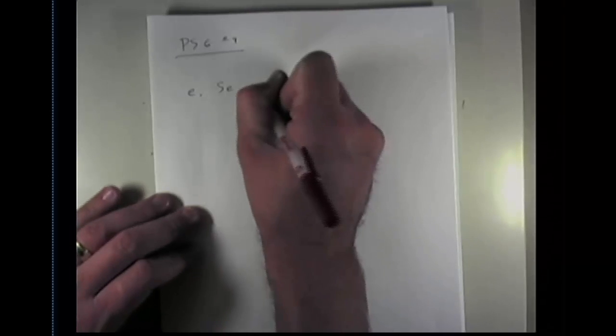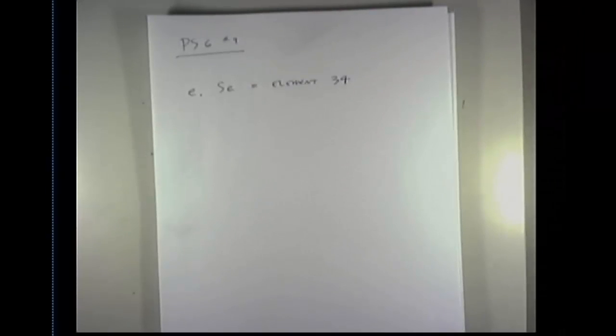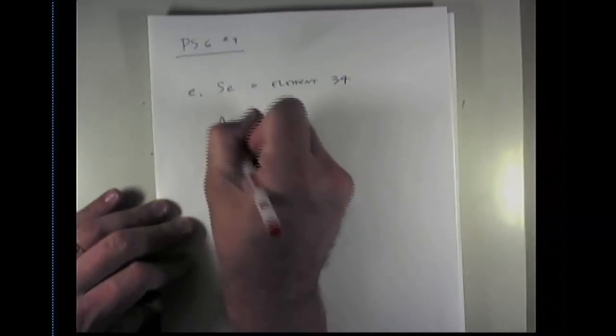If we look at the periodic table, we can see that selenium is element number 34. So this is element 34. If I were to write the entire electron configuration for selenium, it would take me a while. However, I am going to write the abbreviated electron configuration for selenium. What I do is I realize that the noble gas that precedes selenium on the periodic table is argon, element number 18. So I write argon with brackets around it. And when we see this, that denotes the entire electron configuration for argon.